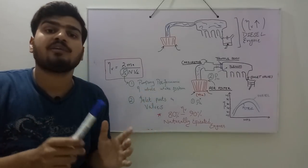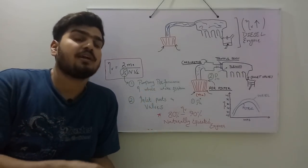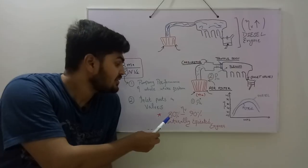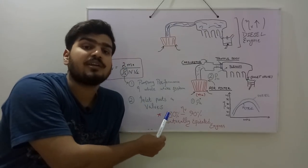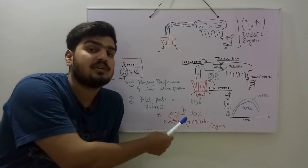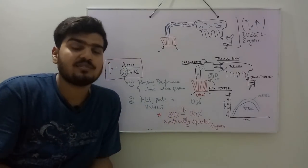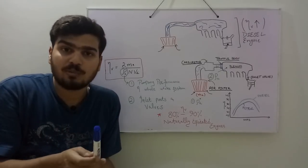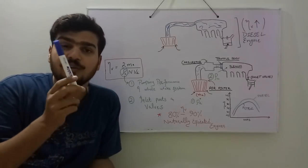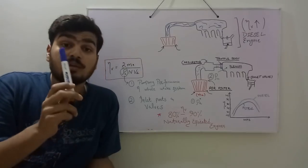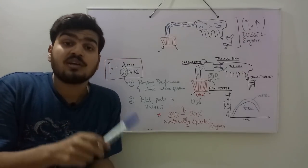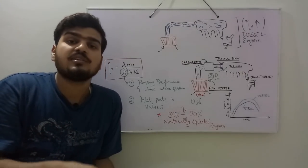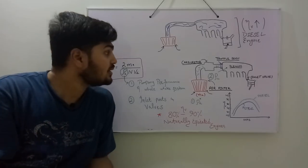The second point is that volumetric efficiency generally lies between 80 to 90 percent for naturally aspirated engines, meaning there is no supercharger or turbocharger present. With a turbocharger or supercharger, your volumetric efficiencies will be greater than 100 percent.